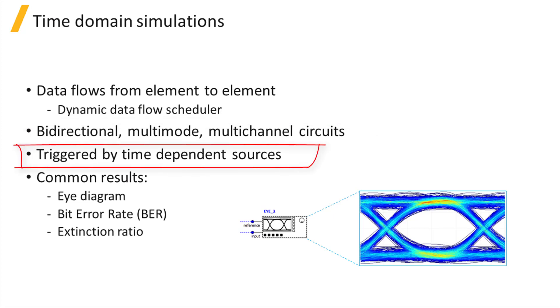When one or more time-dependent sources are connected to the inputs of the circuit, Interconnect runs a time domain simulation. Some common results obtained from time domain simulations are eye diagrams, bit error rates, and extinction ratios.